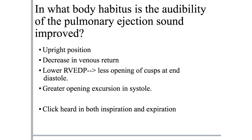To improve audibility of the pulmonary ejection sound, have the patient stand or sit upright. Upright posture decreases venous return, so the already low-compliant RV is not stressed with increased venous return. As a result, there is less premature opening of pulmonary valve cusps at end diastole, and in subsequent systole there is a greater opening excursion, bringing out the ejection sound - which can then be heard in both inspiration and expiration.